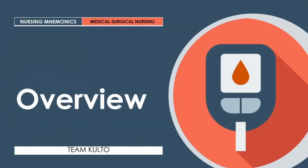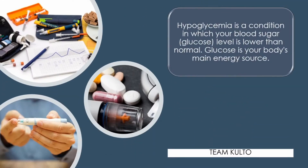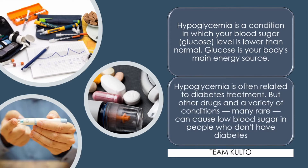Overview: What is hypoglycemia? By definition, hypoglycemia is a condition in which your blood sugar — or glucose level — is lower than normal. Glucose is your body's main energy source. Hypoglycemia is often related to diabetes treatment, but other drugs and a variety of conditions can cause low blood sugar in people who don't have diabetes. Breaking it down: 'hypo' means lower than normal, 'glyc' refers to glucose, and 'emia' means in blood — so, low glucose level in the blood.